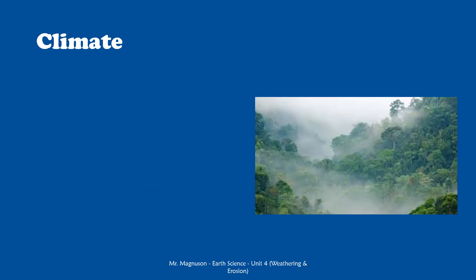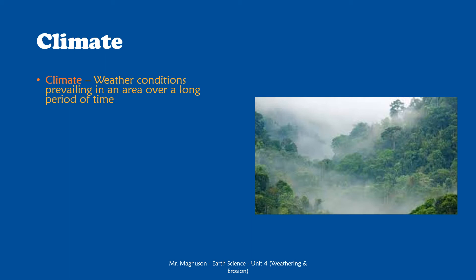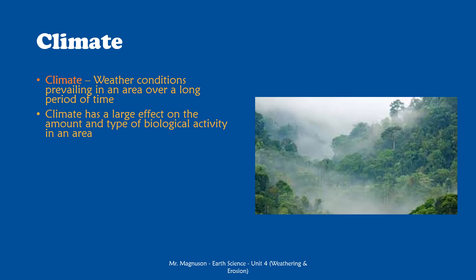Another big factor in the rate of weathering is climate — the weather conditions that prevail in an area over a long period of time. We live in a desert here in Lancaster, California, and there's not a lot of living things outside if you're in the middle of the desert. Climate has a large effect on the amount and type of biological activity in an area. If you were somewhere wetter, like the northeast, that isn't so hot and dry, there's going to be a lot more biological activity, which is one of our types of mechanical weathering.